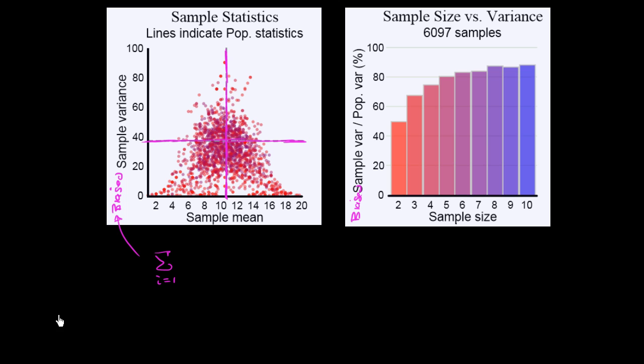That is being calculated for each of our data points. So starting with our first data point in each of our samples, going to our nth data point in the sample. You're taking that data point, subtracting out the sample mean, squaring it, and then dividing the whole thing not by n minus 1, but by lowercase n.